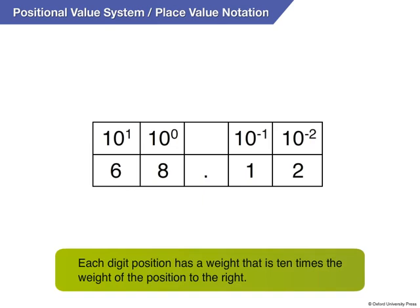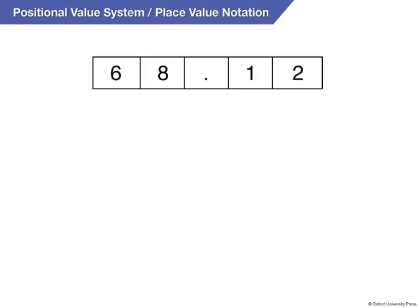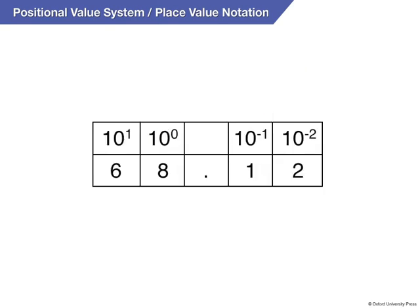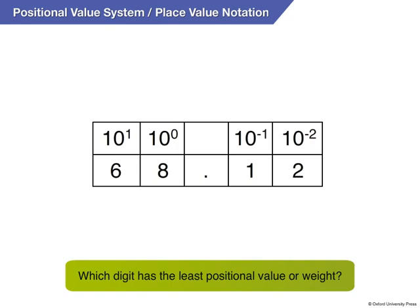Exactly. Let's expand 68.12 to verify it. 68.12 is equal to 6 × 10¹ + 8 × 10⁰ + 1 × 10⁻¹ + 2 × 10⁻² which equals 6 × 10 + 8 × 1 + 1/10 + 2/100, which equals 60 + 8 + 0.1 + 0.02. Can you tell me which digit in the decimal number 68.12 has the least positional value or weight?